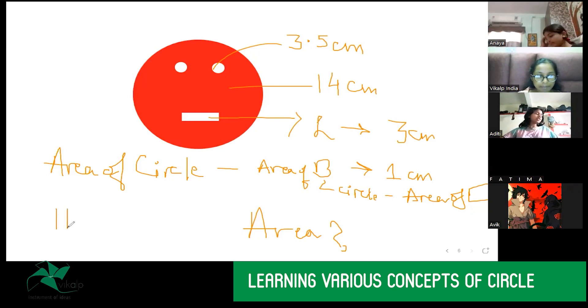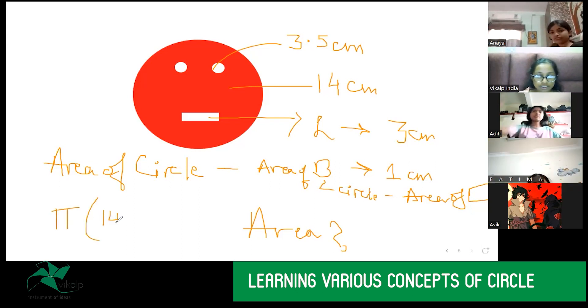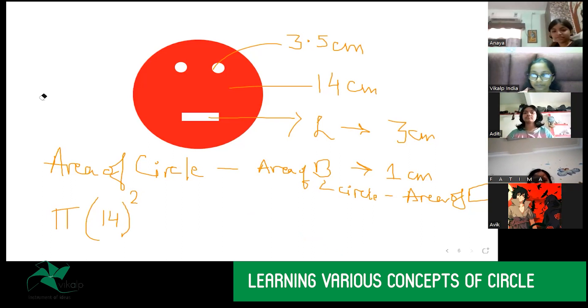Now, what is the area of the big circle? It will be pi 14 square. This one circle will be pi into 196. Yes. Pi into 196, right? Okay. Now, from this, we have to subtract the area of the two small circles.